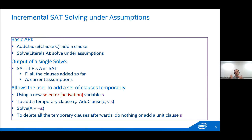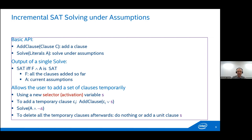The incremental SAT API has two functions: add_clause, which adds a clause, and solve under a set of assumptions. The output is SAT if all clauses and the current assumptions are satisfied, otherwise UNSAT. A useful pattern is adding a selector variable s to a clause, then passing assumption not-s to make that clause count only for the current invocation and later remove it.